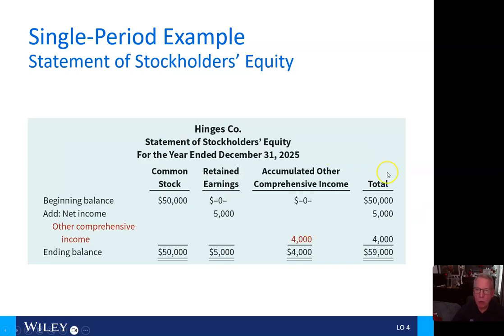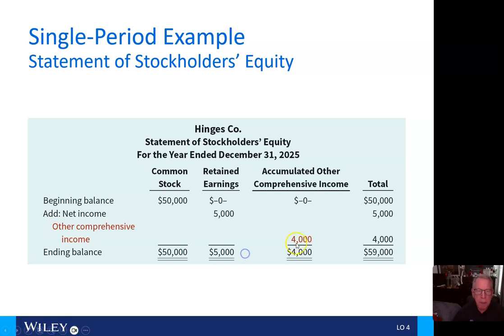In the stockholders' equity section, common stock is $50,000, retained earnings reflect the $5,000 of net income, and the other accumulated comprehensive income is $4,000, for a total of $59,000.